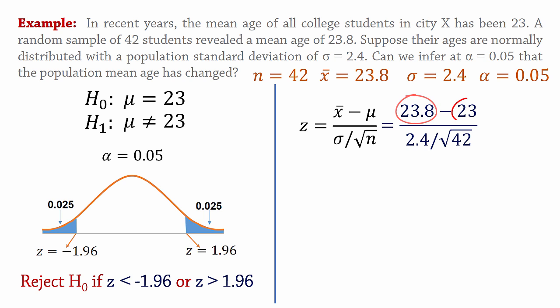So using the sample mean, population mean, population standard deviation and the sample size, we calculate the test statistic as 2.16. And now it's decision time.